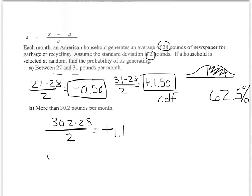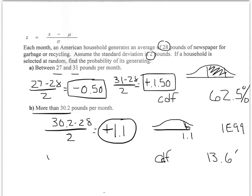More than 30.2, follow the same logic. Z-score of positive 1.1. We're going more than, so we want the value that's above 1.1. I'm going to put that in again. It's CDF, this is my minimum, my maximum would be infinity, 1 e 99, and I end up with 13.6 percent.